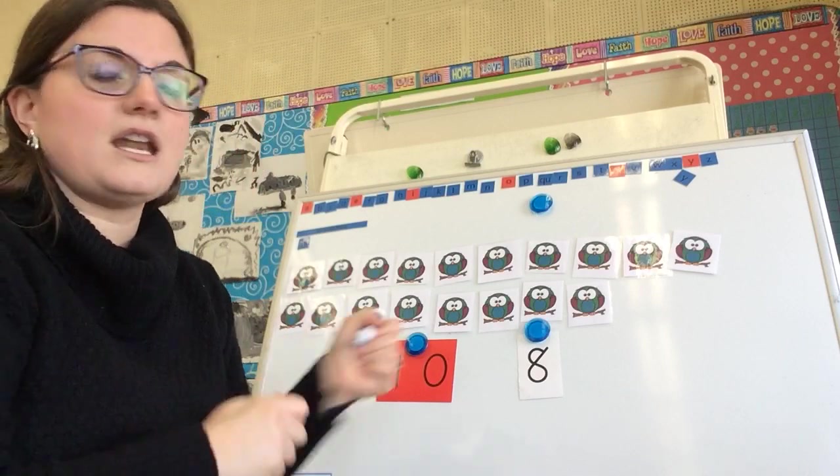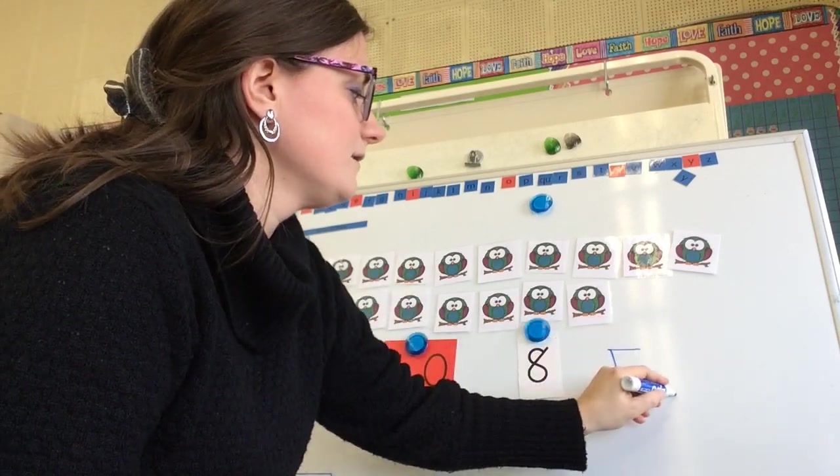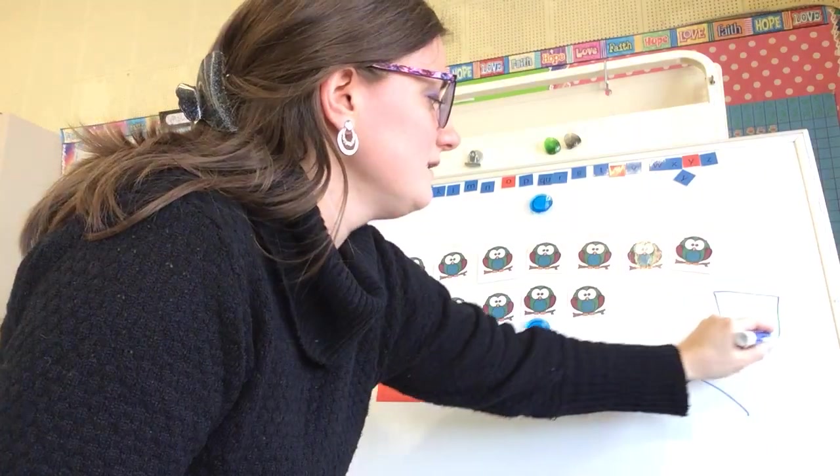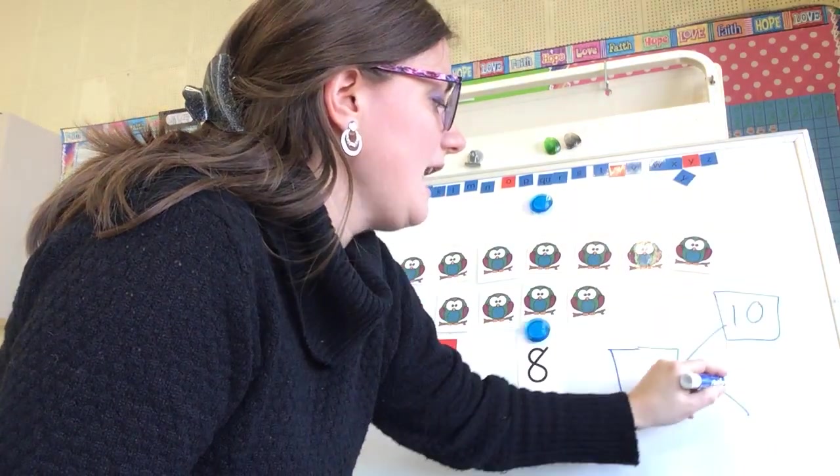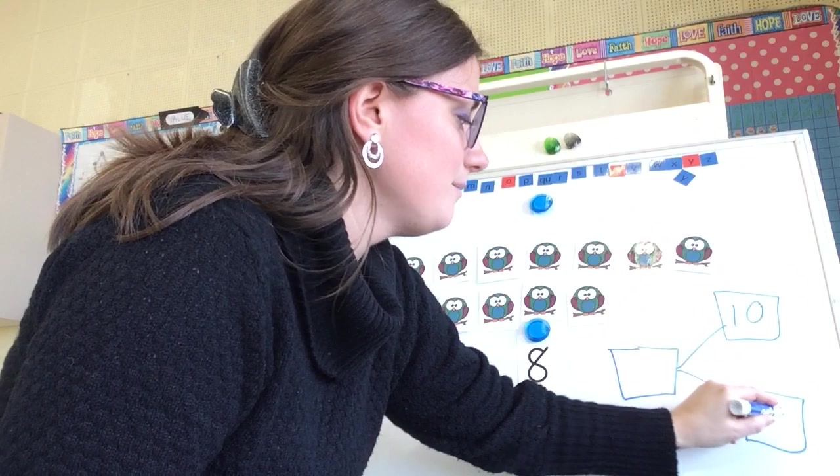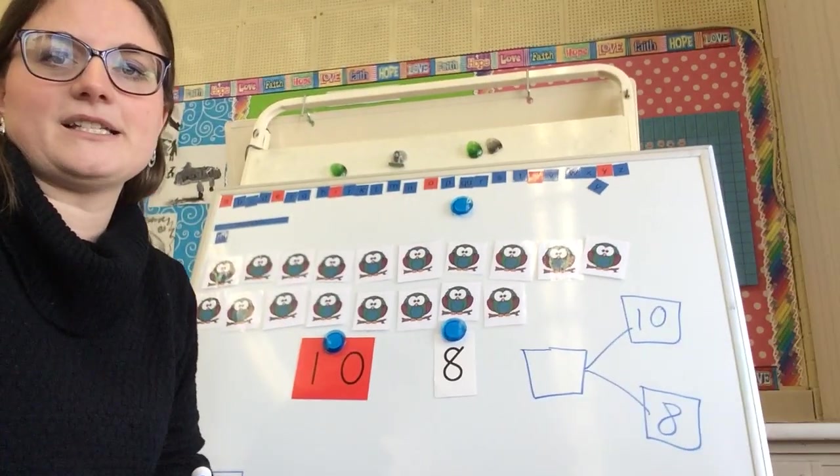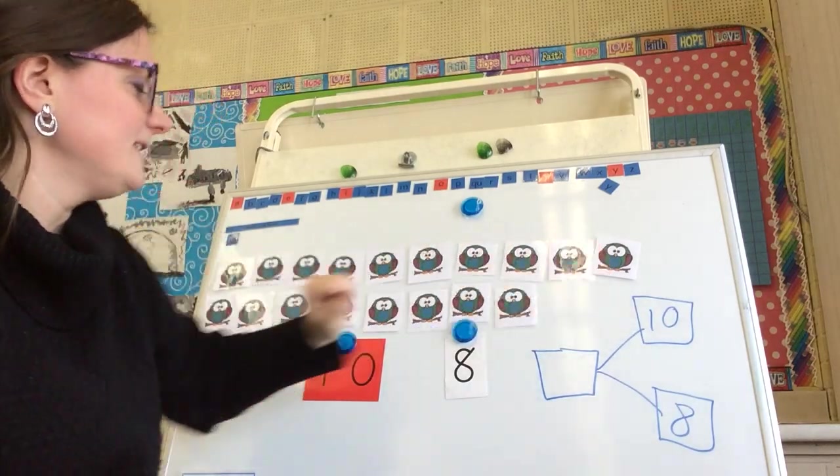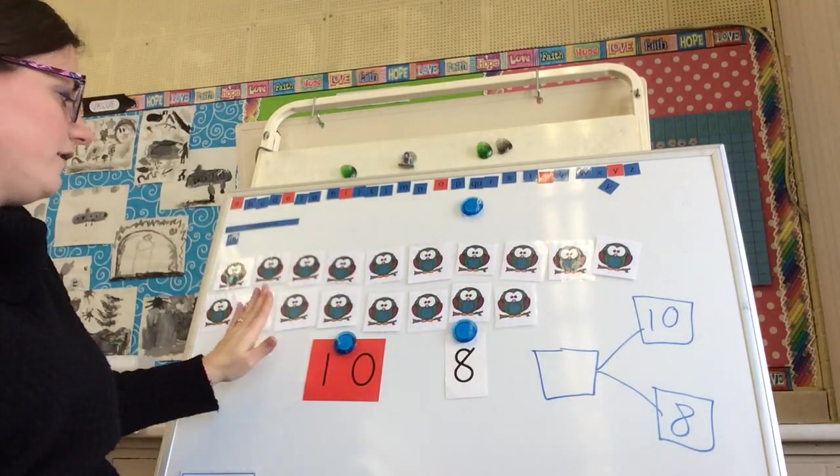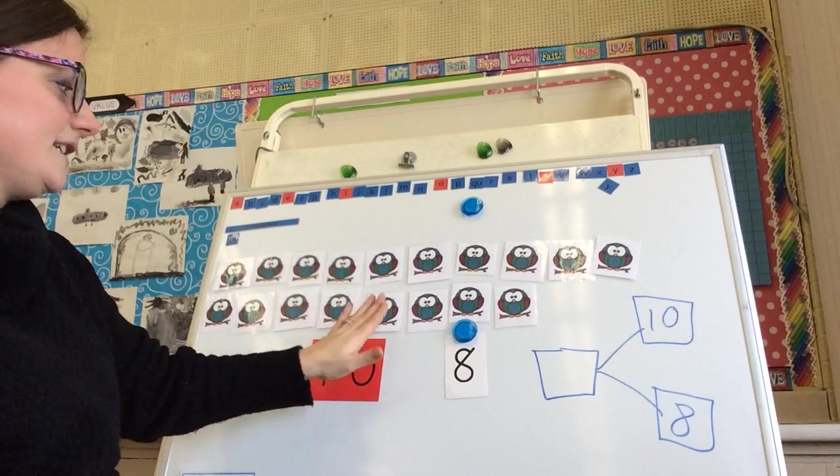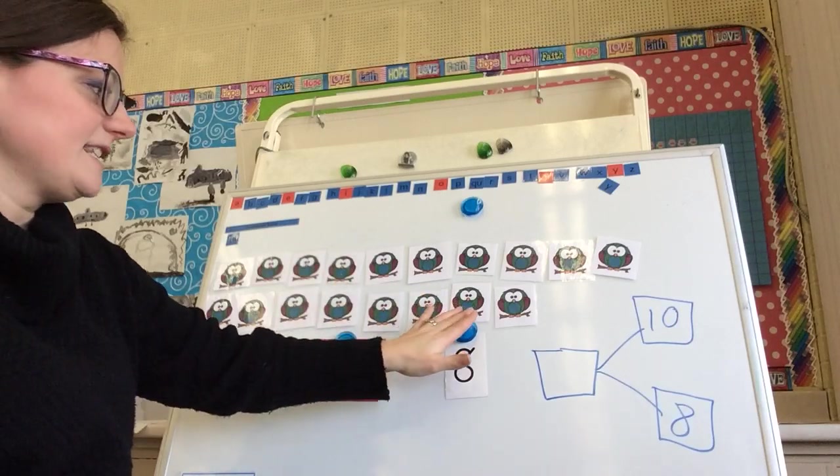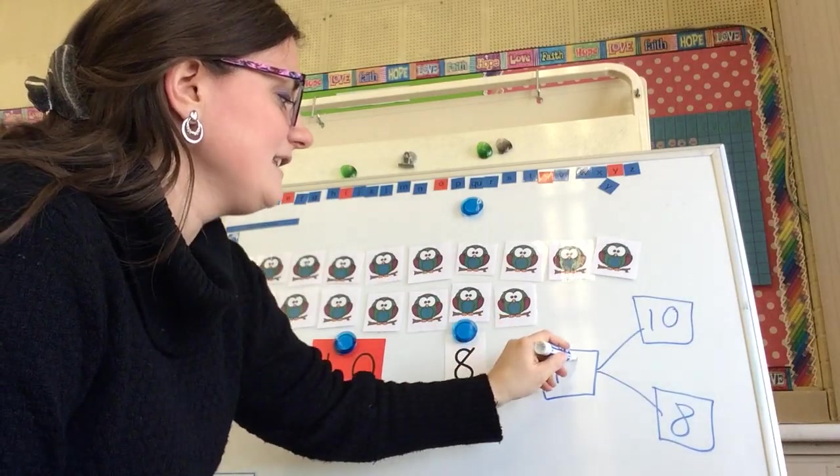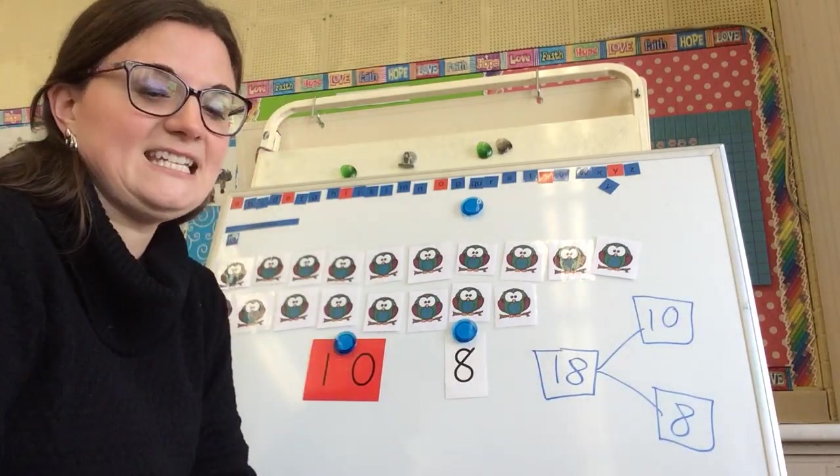So we could draw our number bond over here. What do 10 and 8 make? Here, I'll turn that a little bit so you can see. What do 10 and 8 make? So if we have 10, 11, 12, 13, 14, 15, 16, 17, 18. Right. 10 and 8 make 18.